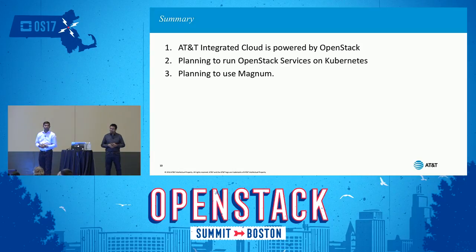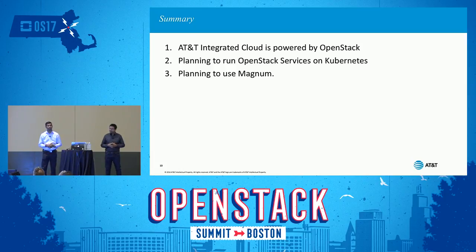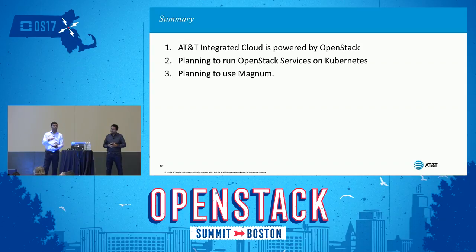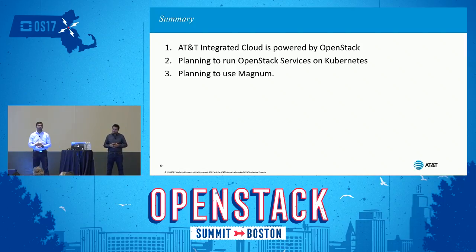To summarize: AT&T Integrated Cloud is powered by OpenStack and we are committed to OpenStack. We are planning to run OpenStack services as containers, and we plan to use Magnum. We encourage the community to consider these use cases when designing and coding projects within OpenStack. We can take a few questions.